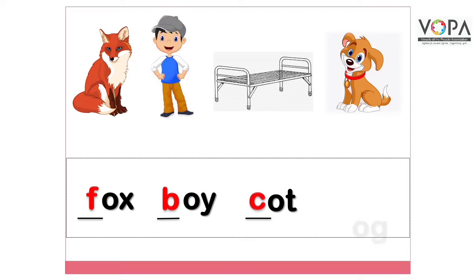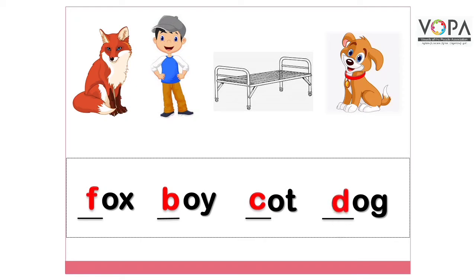'og' और आगे है खाली जगह। ये ना बच्चों, ऊपर जो तस्वीर दी गई है वो है dog की। तो हमें पता है कि dog इस word की शुरुआत 'd' से होती है, तो इसलिए यहाँ खाली जगह में क्या आएगा — यहाँ आएगा 'd', dog।